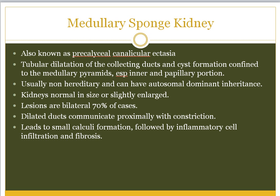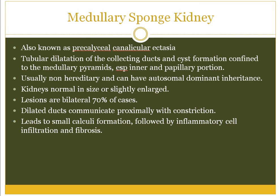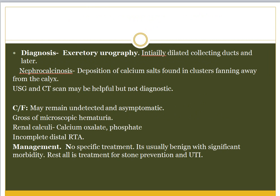Obstruction leads to precipitation of crystals and stone formation, hence nephrocalcinosis is a common finding in medullary sponge kidney. Calculi formation leads to obstruction, rupture of the tubule, inflammatory cells, followed by fibrosis — that's how damage occurs over time. Diagnosis is by excretory urography, which shows dilated collecting ducts initially and later nephrocalcinosis — calcium salts deposited in clusters fanning away from the calyx, a very classic appearance.